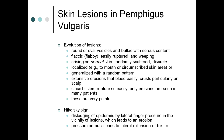Skin lesions in pemphigus vulgaris present as round or oval vesicles and bullae with serous content — flaccid, flabby, easily ruptured and weeping — arising on normal skin. They may be discreet and localized (e.g., mouth or circumscribed skin area) or generalized with a random pattern. Extensive erosions that bleed easily and crust, particularly on the scalp, are seen. Since blisters rupture so easily, only erosions are seen in many patients.